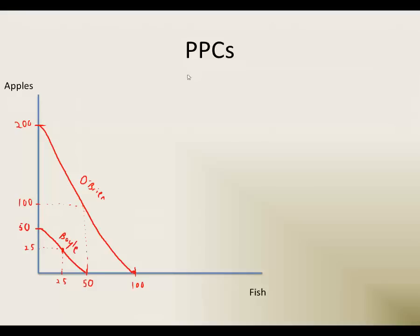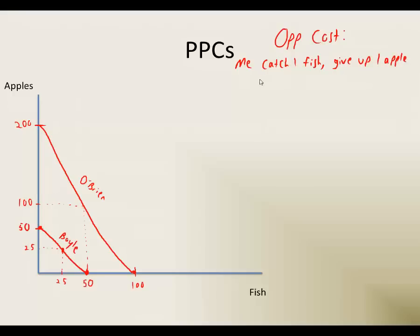Now let's talk about our opportunity costs. So for me, if I want to catch one more fish, you can see that I have to give up picking one apple. We can look at the opportunity cost of moving between any two points on my PPF — either way, if I want one more fish, I have to give up an apple. So if I catch one fish, I have to give up one apple. Likewise, if I pick one apple, I have to give up one fish.